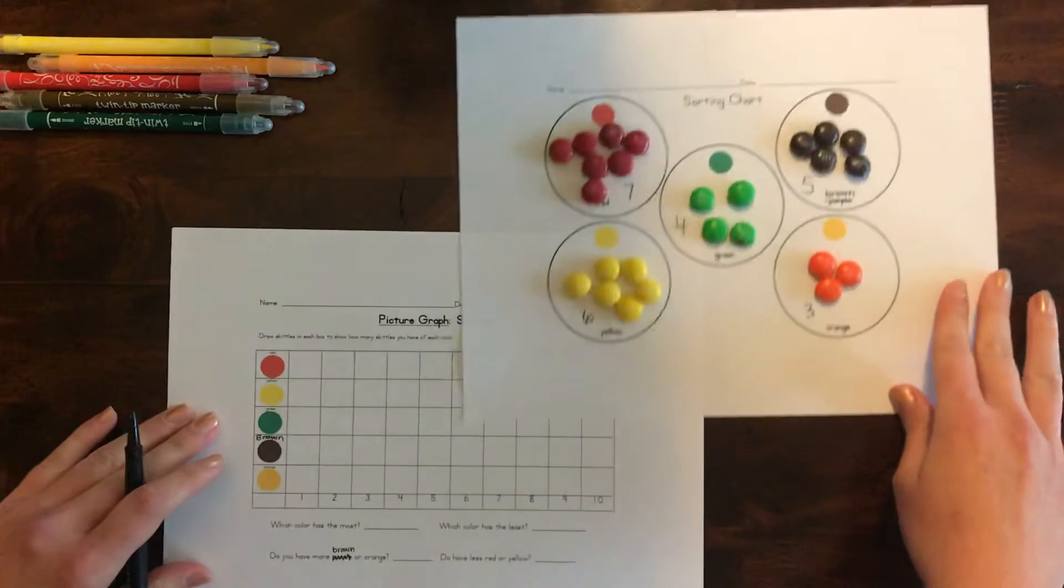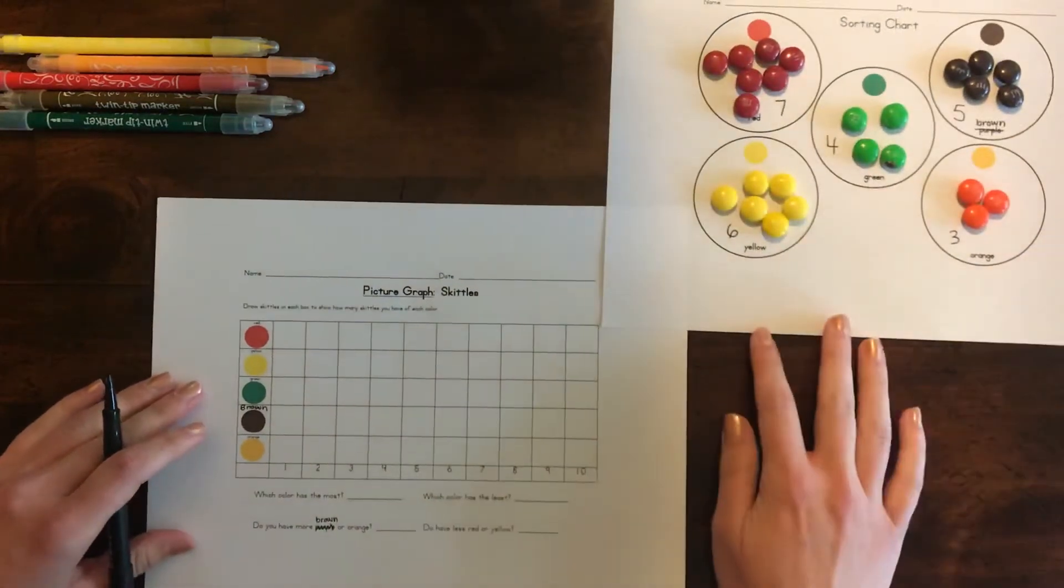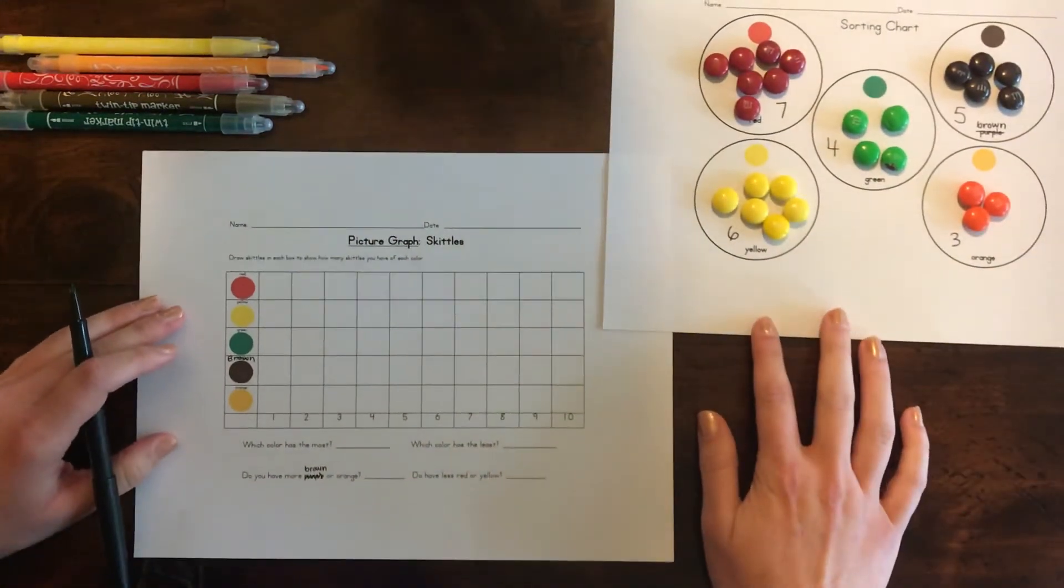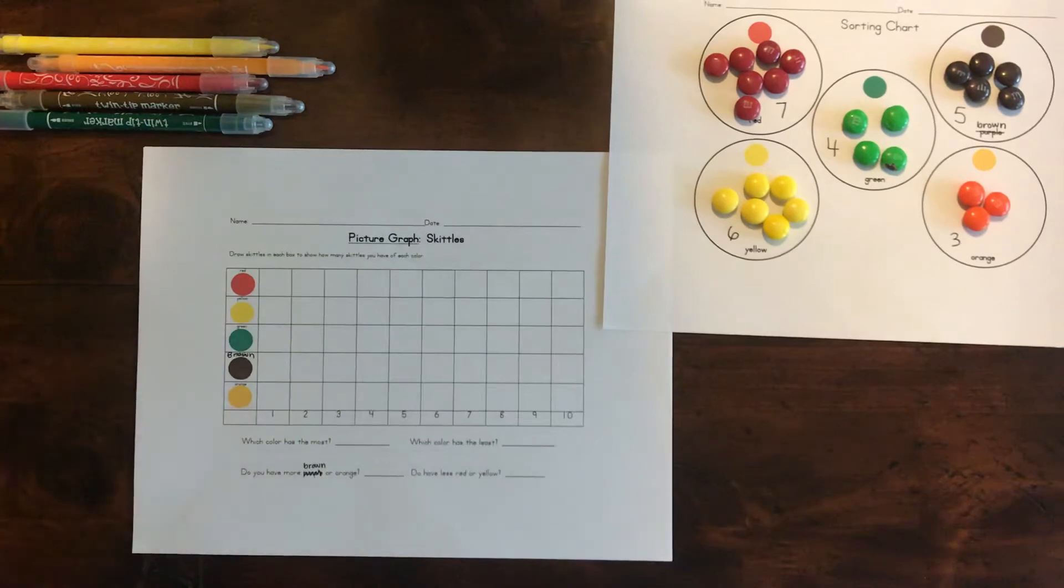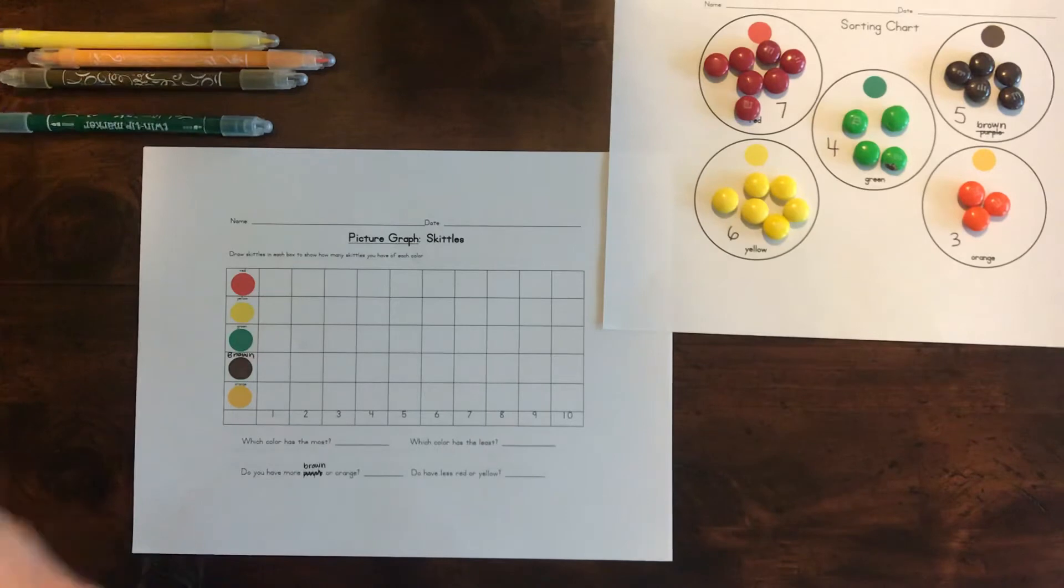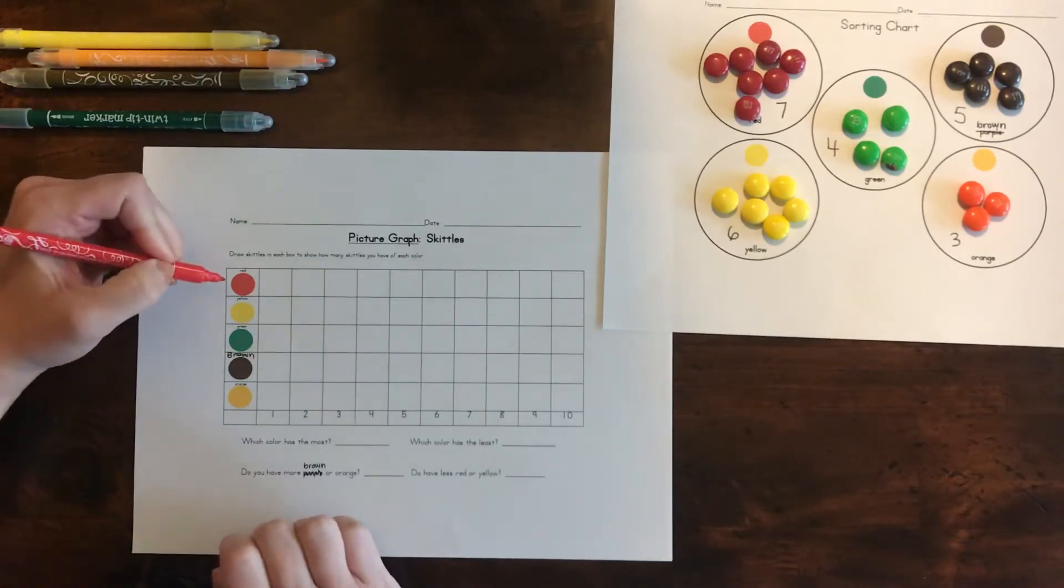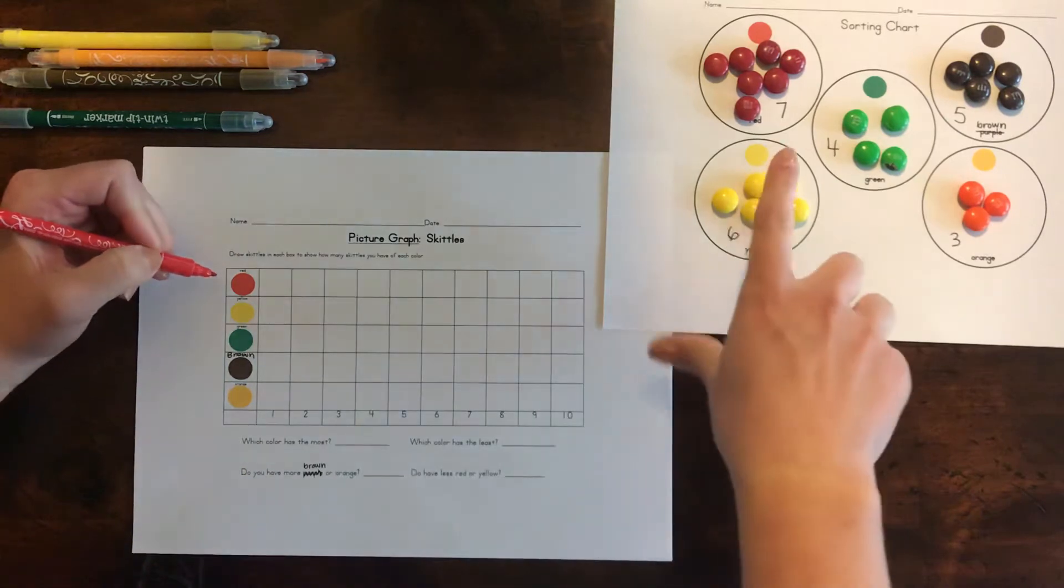So let's look at the next one we're going to do. This is a picture graph. So we are going to make a graph that shows us how many of each M&M we have with pictures. So you're going to need the colors of your M&Ms for this one. We're going to start with red.